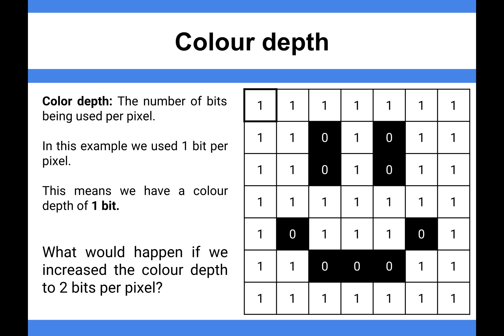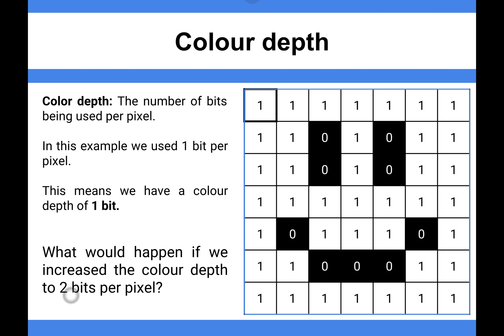Colour depth is the number of bits being used per pixel — that's how it's represented. In our example, we've got one bit per pixel, so our colour depth would be one bit. When you work out how many combinations you've got, it's talking about how many colours you've got within your image — that's why it's known as colour depth.